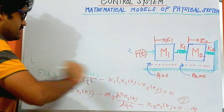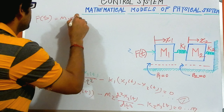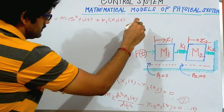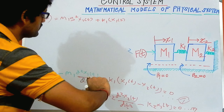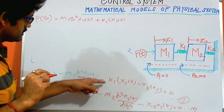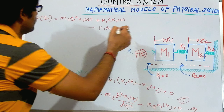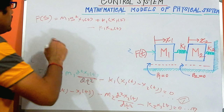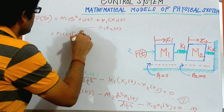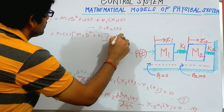If I apply the Laplace transform for equation 1, the form I get is: F(s) equals M1 times s² times X1(s), plus K1 times X1(s), minus K1 times X2(s). If I am taking X1(s) as the common factor, the solution is: X1(s) times (M1s² plus K1), minus K1 times X2(s).